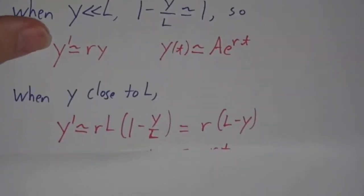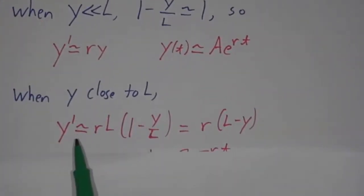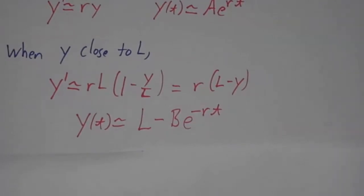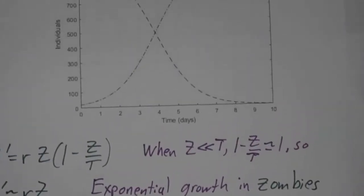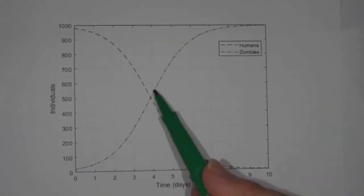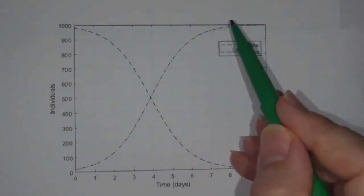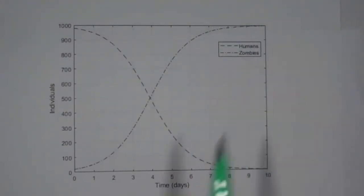But in the later stages, when y is close to L, ry(1 - y/L) is really close to rL(1 - y/L), which is r(L - y). This is an equation we know how to solve, and that has a solution: y(t) = L minus something that's decreasing exponentially. So in a logistic equation, whether it's zombies or anything else, first you get exponential growth, then it tapers off, and it approaches the limit exponentially fast. Thank you.